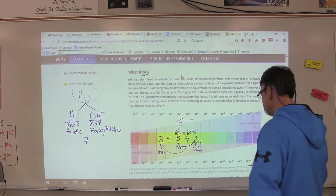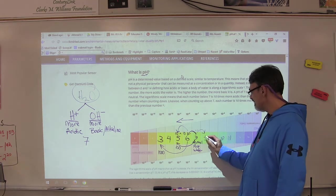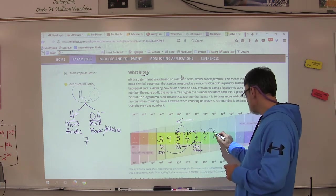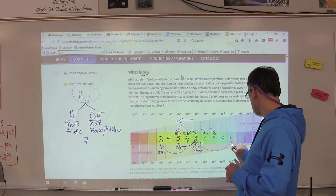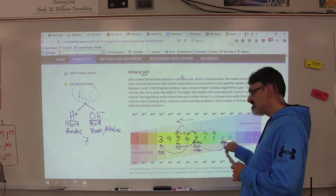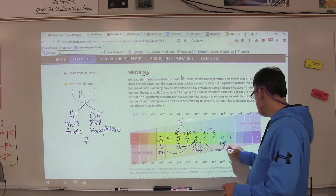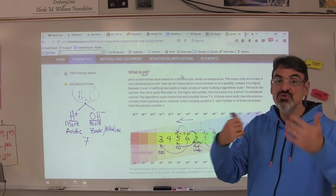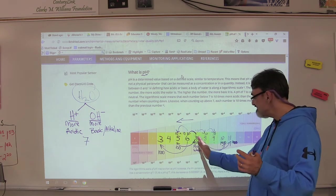It works the same way going towards basic. If I'm going from seven to eight, eight is ten times more basic than a liquid of pH seven. A nine is ten times more basic than a liquid with a pH of eight. If I go from seven to ten, that's ten times ten times ten times ten - a pH ten is a thousand times more basic than water. Whereas a pH eleven is a thousand times more basic than a pH eight. And eight is around the pH that our oceans should be. Saltwater oceans tend to be a little more basic. Freshwater like rivers, streams, and lakes tend to be a little more acidic.